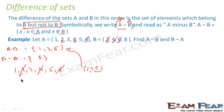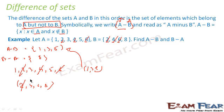Similarly for B minus A, write all the elements in B first, then subtract all common elements found in A. 2 is in A — subtract. 4 is there — subtract. Similarly 6 is there — subtract. What you get is 8.